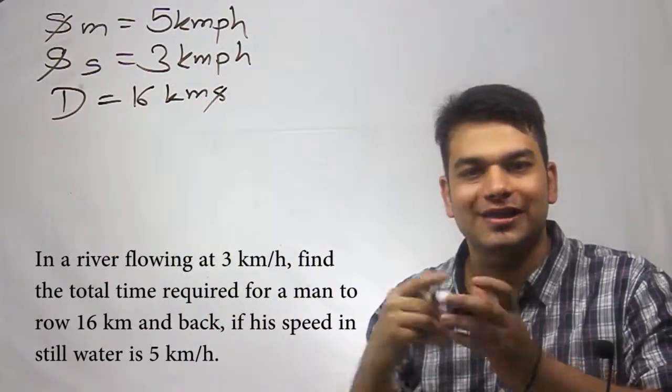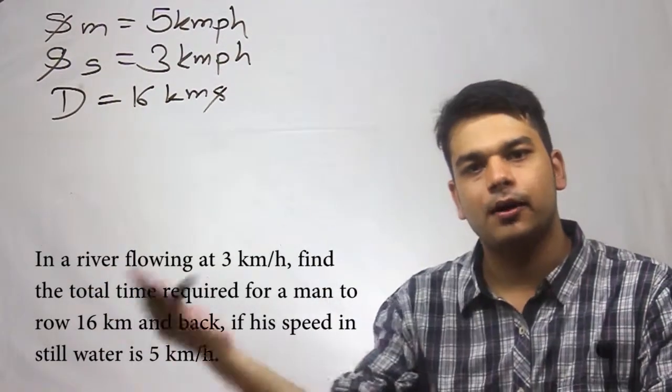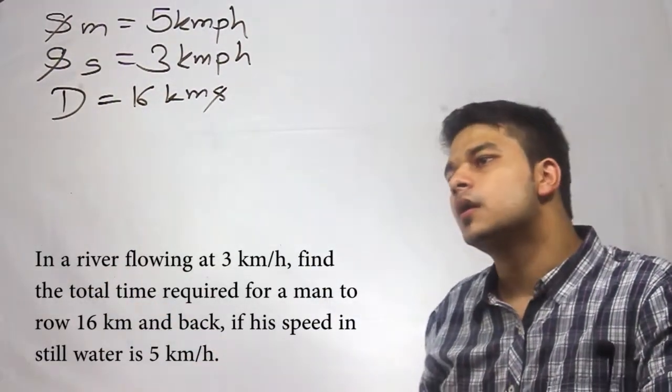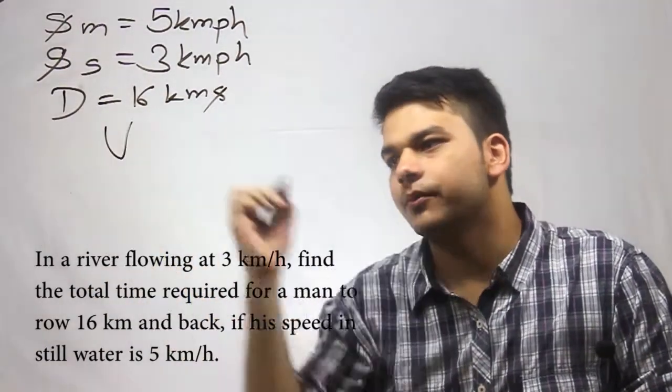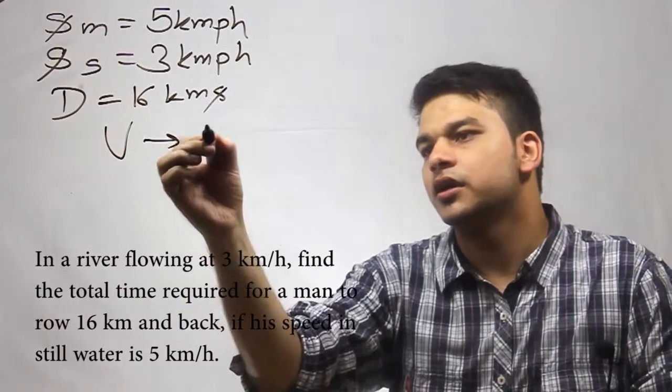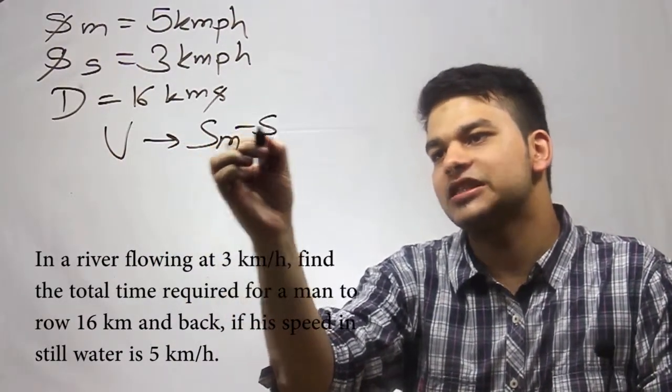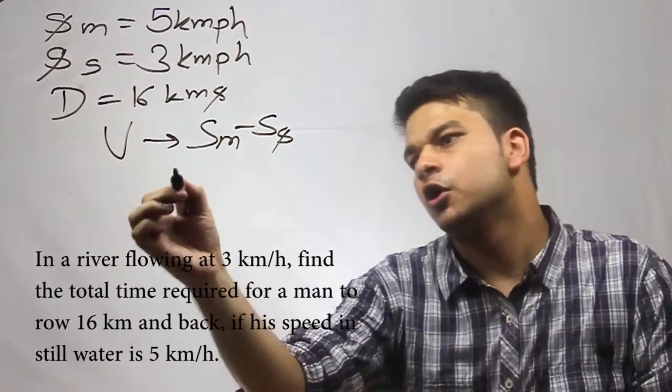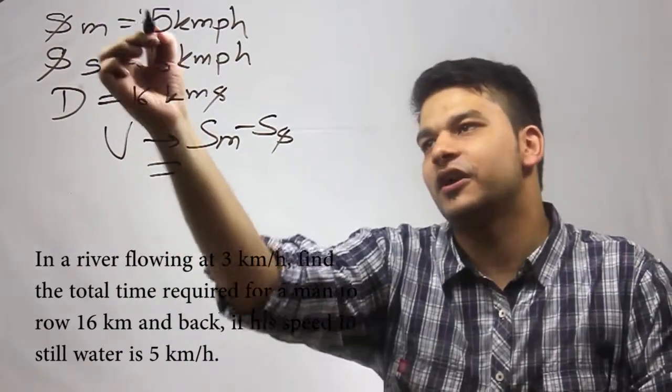Now upstream, the speed will be speed of man minus speed of the stream. So this speed will be equal to 5 minus 3, which is 2 kilometers per hour.